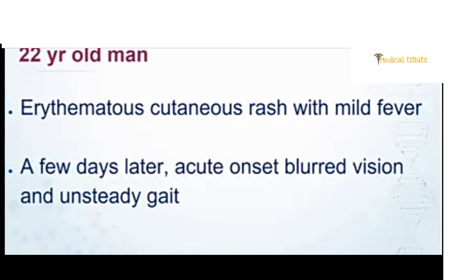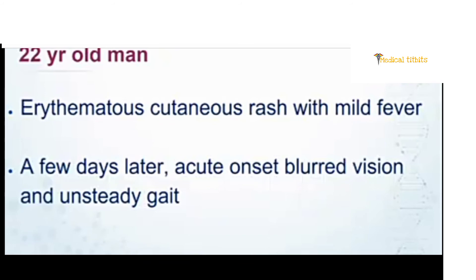Dr. Sunita Pai asks about the definition, clinical signs, and treatment of ataxia. Ataxia means imbalance. If the patient has unsteadiness of gait, it is called gait ataxia. Unsteadiness in limb movement — demonstrated through finger-nose or heel-shin tests — is appendicular ataxia. Ataxia can be cerebellar in origin, sensory (due to absent joint position sense from neuropathy), or spinal (posterior column involvement). The loose term 'ataxia' means unsteadiness.